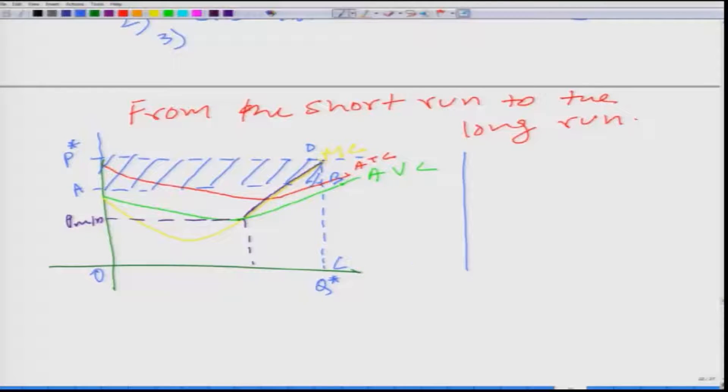So, as more and more firms would enter in the market, what would happen to the supply curve? The supply curve would shift rightward and as supply curve would shift rightward, what would happen to the market price? Let us say the market price will come down.